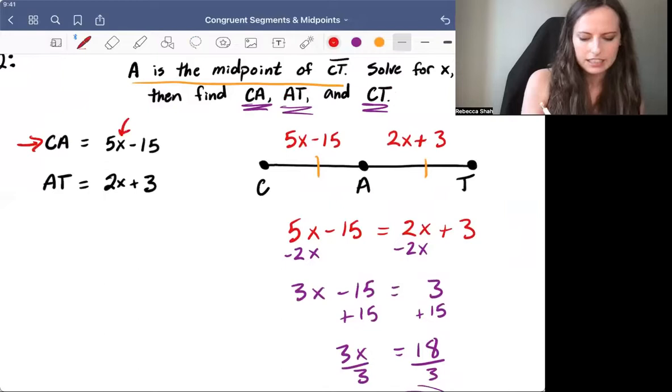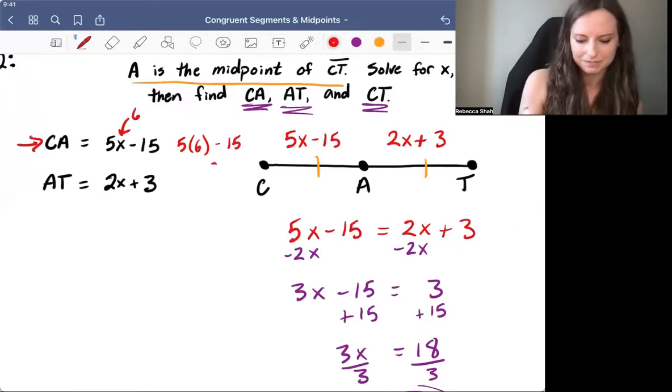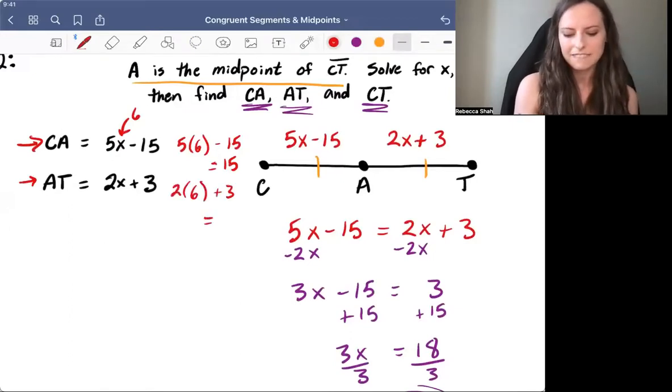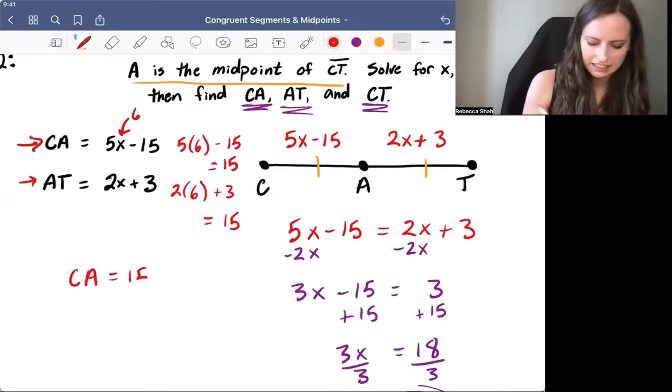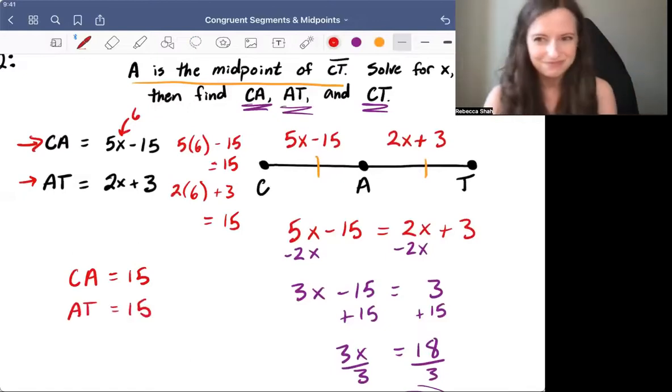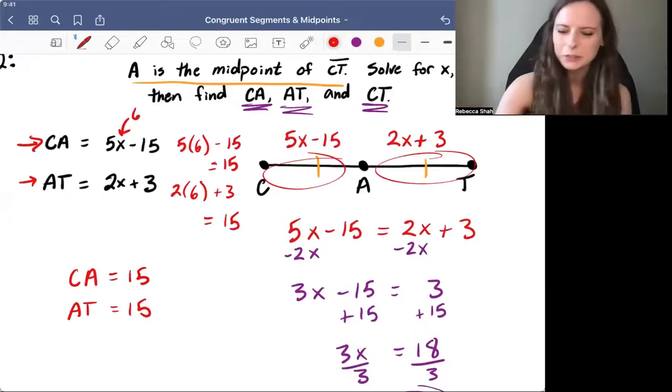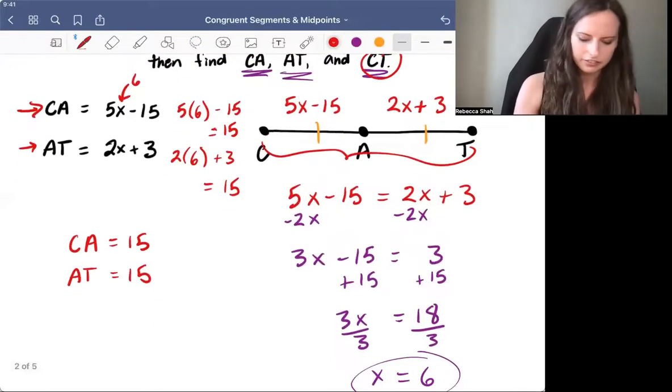So I'm going to take that X value of 6 and plug it back into each of those things. For CA, plugging 6 in for X, we have 5 times 6 minus 15, and that equals 15. And then same thing for AT. We have 2 times 6 plus 3. Well, 2 times 6 is 12 plus 3. That equals 15 too. So we can say CA equals 15 and AT equals 15. That makes sense because we said CA and AT are congruent. They're equal. And last but not least, segment CT is the whole thing. So that's just 15 plus 15, which equals 30.